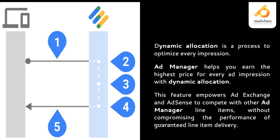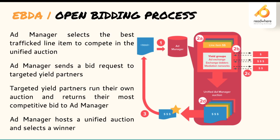Looking at how this process works: when a request is sent to Ad Manager (step 1), it checks multiple line items internally (step 2a), then moves to step 2b to check with other demand partners through Exchange Bidding — calling in demand partners like Rubicon, MoPub, PubMatic, Index Exchange, and others. The highest bid from 2b is submitted back to Ad Manager for a unified auction (step 2d), and the winning ad is displayed (step 3) in the HTML on the page.